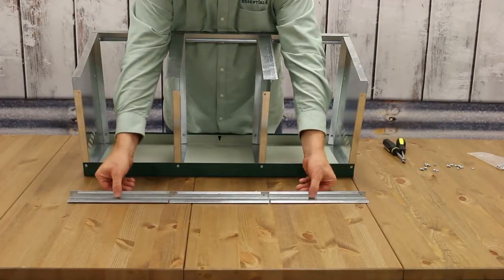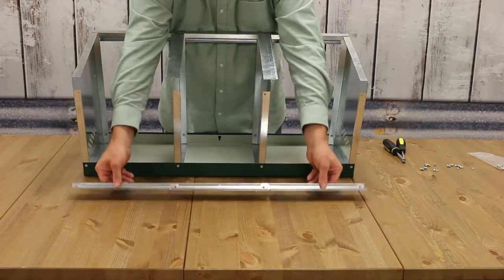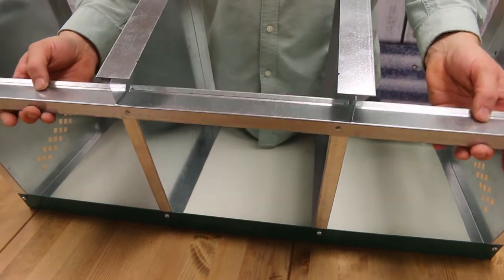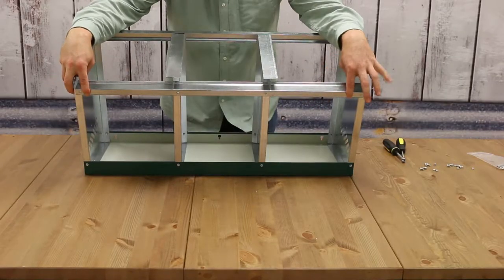Your last piece is the tray stop. With this lip facing up, flip it over, slide it onto the dividers, line up the holes, and then fasten.